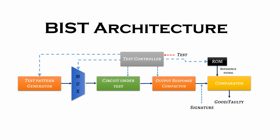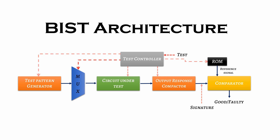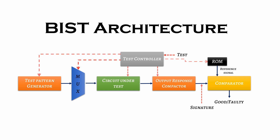When a test input is given to the test controller, it initiates the testing process by sending a signal to the test pattern generator and the multiplexer. The test pattern generator generates test patterns using a linear shift register with XOR operations. The multiplexer routes the test pattern to the circuit under test, and based on the pattern, the logic block generates an output. This output is accumulated in sequential order by the compactor. The signal from the compactor and the signature from the ROM are then compared in the comparator. If both inputs are the same, the circuit is good; if they differ, the circuit is faulty and should be replaced.